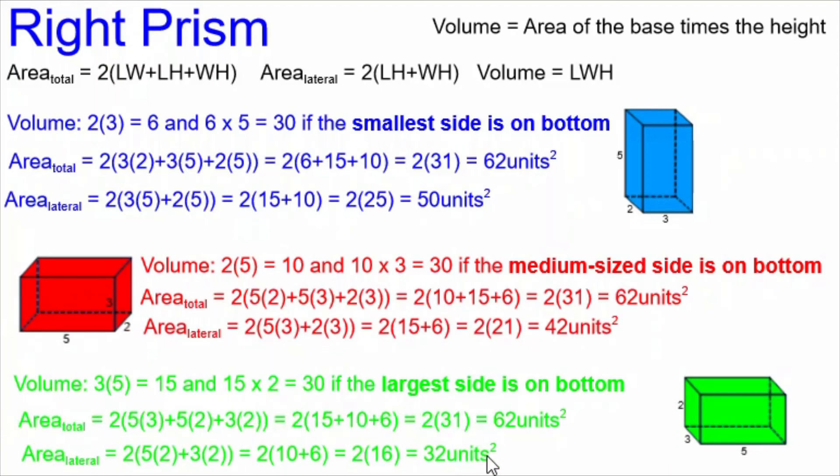With the largest side on the bottom, the lateral area ends up being 2 times 16, which is 32 units squared.